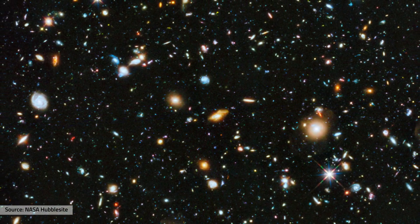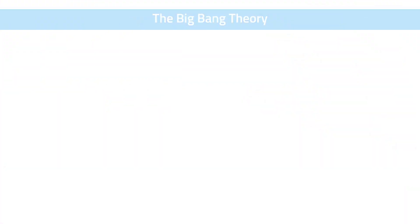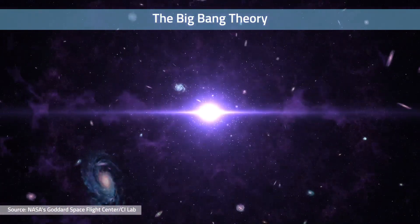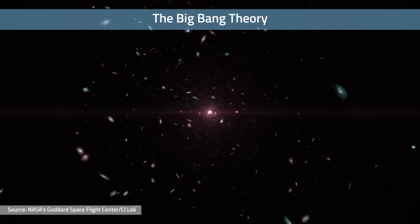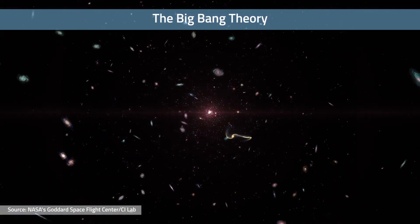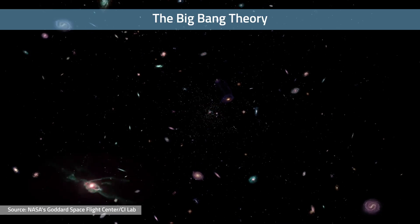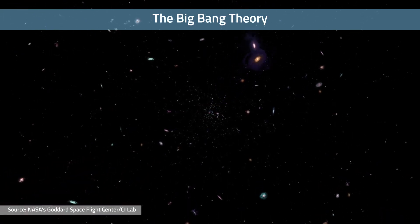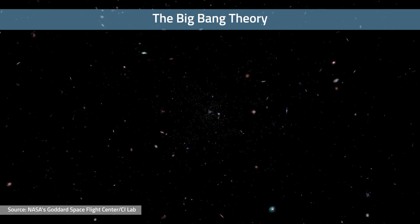There are different theories that try to explain this. According to the Big Bang theory, the universe was formed approximately 13.7 billion years ago from a cataclysmic expansion which hurled all matter and created space. As a consequence of this event, the first subatomic particles such as protons, neutrons, and electrons were formed.